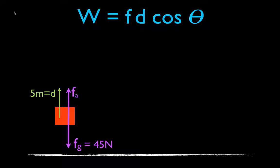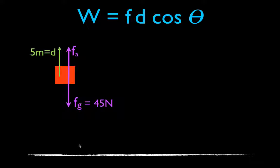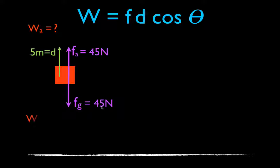We have an object here, and we're going to raise the object 5 meters. We have an applied force and a gravitational force, and we want to figure out how much work each of those forces does when we raise that object up 5 meters. We're talking about negative and positive work, so we're really going to focus on whether the work is negative or positive. The weight of the object is 45 newtons, and we raise it up at a constant velocity — no acceleration. One of the forces will do negative work and one will do positive work.